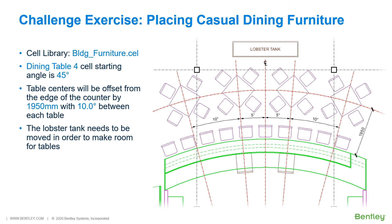For this last challenge exercise, you will be placing casual dining furniture in the vicinity of the sushi bar. You will be using the cell library: building, furniture. You will be placing the cell dining table 4, starting at an angle of 45 degrees. Table centers will be offset from the edge of the counter by 1950 millimeters, with 10 degrees of rotation between each table. As such, the lobster tank needs to be moved in order to make room for the tables.